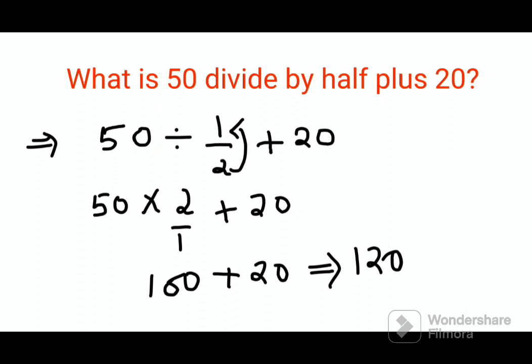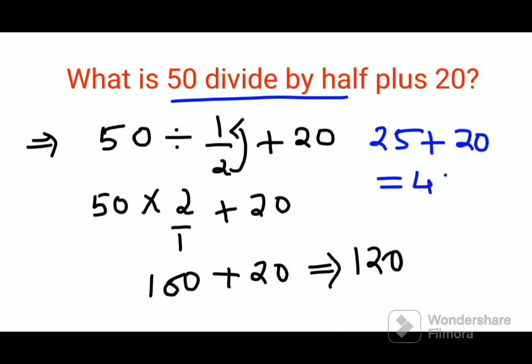Now I'll tell you where people got stuck. They actually took it literally — 50 divided by half as 25, plus 20, and got the answer as 45, which is wrong. This is one particular way where people get confused.